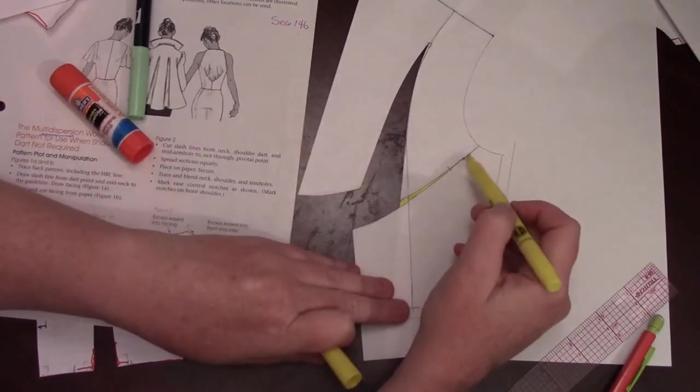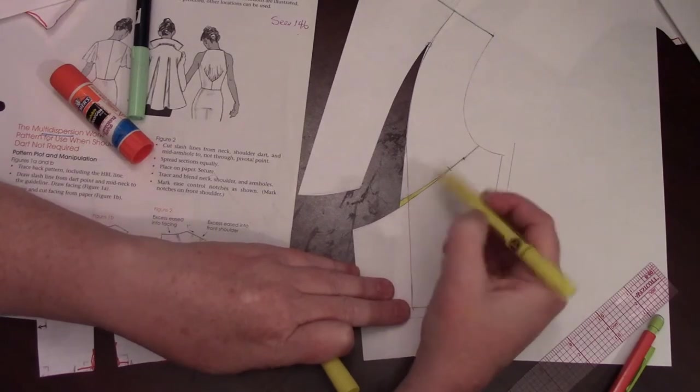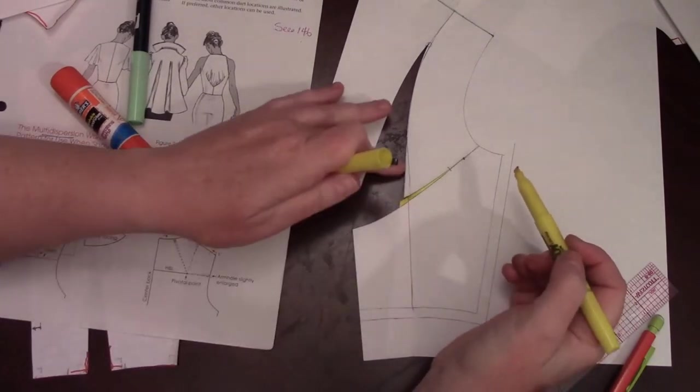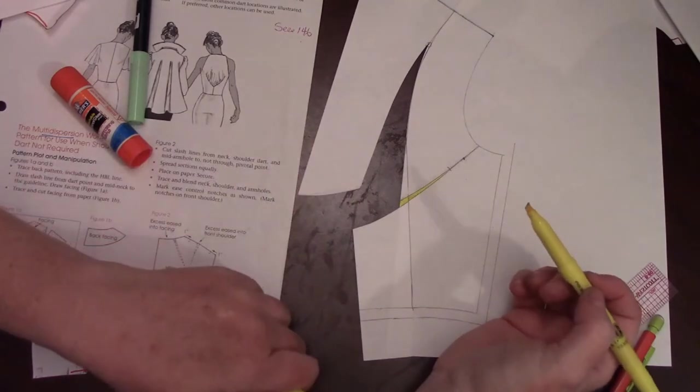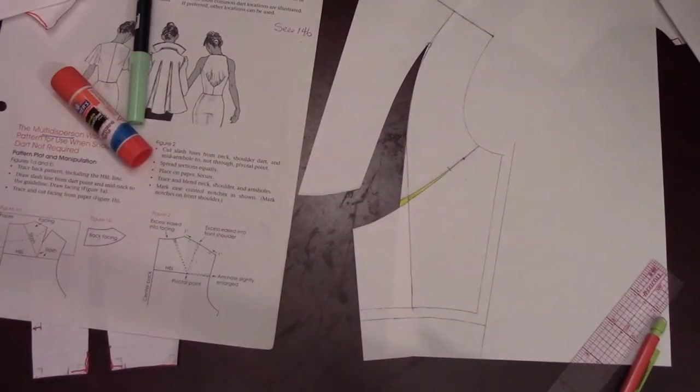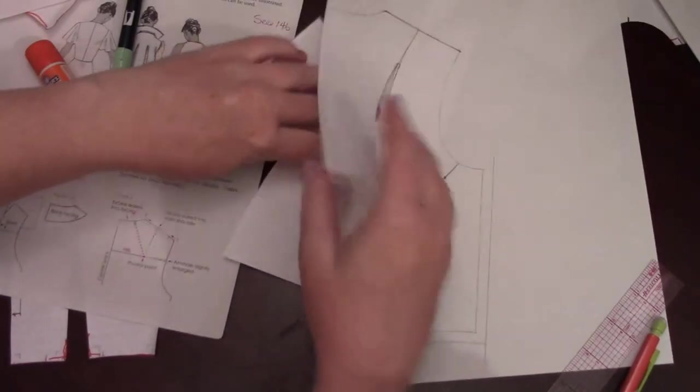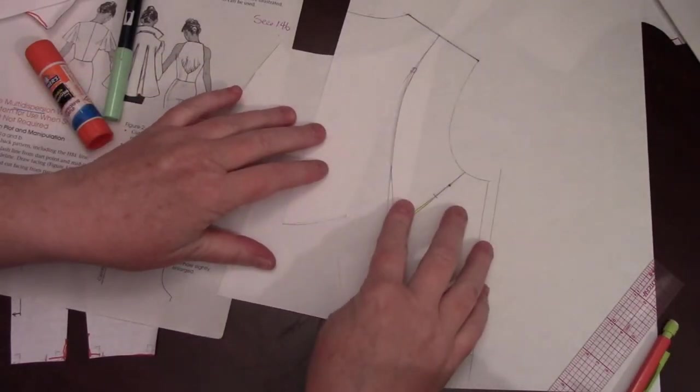And, you would get a little bit of extra bubble put in right there. But, it would probably disappear in the gathers. But, I would be suspicious of that one and make sure that I sewed it out of fabric that I really didn't care about the first time because it will take a little bit of playing with.